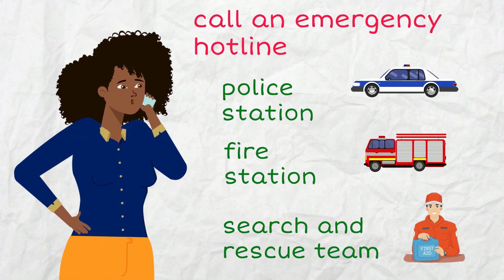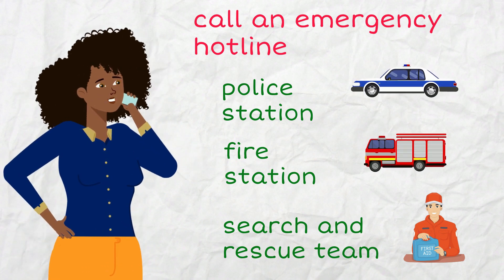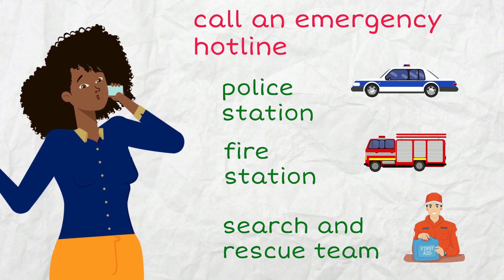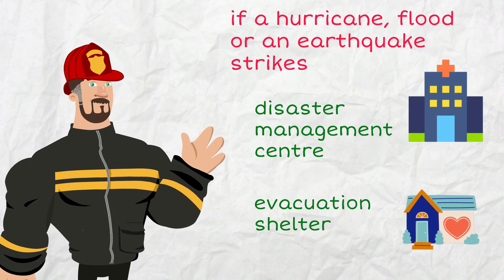I will not speak about city transport in this video because I've got another one which specifically covers the topic of transportation and mobility — you can find all the necessary vocabulary there. Check out the link in the video description. But what I do want to mention is the emergency facilities which must be available and easily accessible in any city or town. In an emergency, people turn to a police station, a fire station, or to special search and rescue teams. To contact them it is necessary to call an emergency hotline, which is a phone number for immediate emergency help. When a disaster strikes like a hurricane, flood or an earthquake, people are sent to disaster management centers or evacuation shelters.